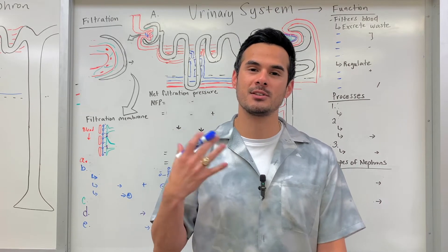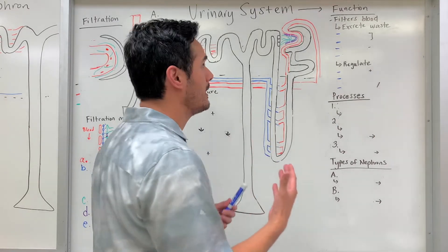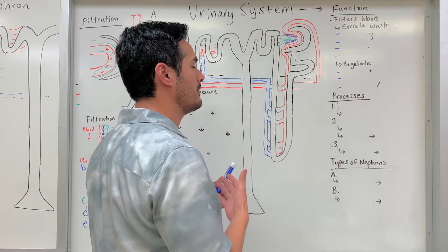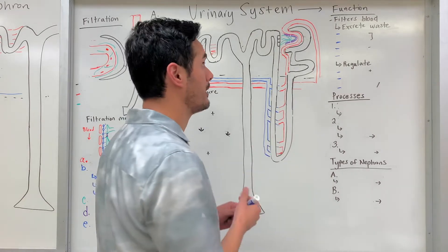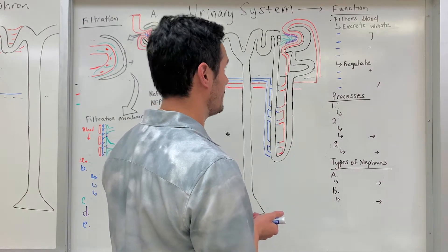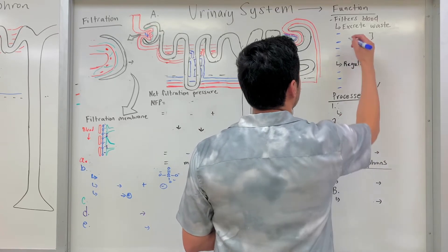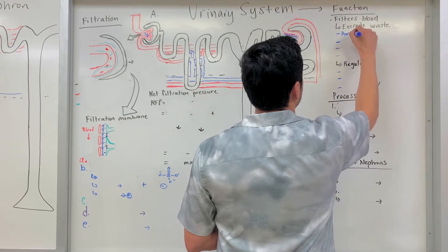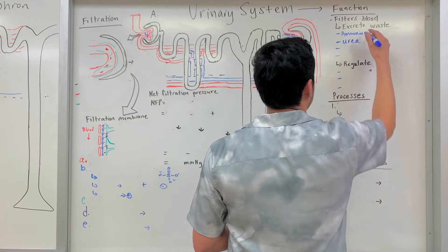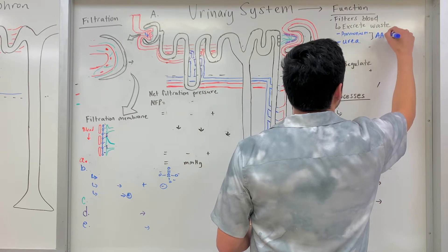The first thing about the urinary system is what's the overall function. The urinary system helps to filter our blood in order to excrete some of the waste and regulate some of the components found within the blood. Some of the things we're getting rid of include ammonium as well as urea, and both of these are byproducts of amino acid metabolism.